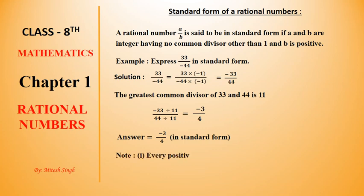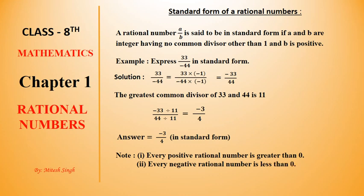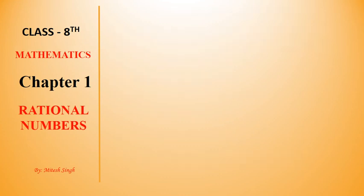Some notes here: every positive rational number is greater than 0, and every negative rational number is less than 0. Now let's start Exercise 1A.